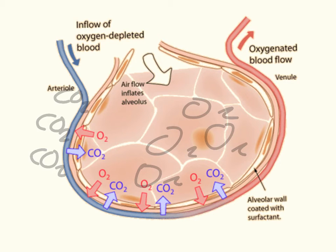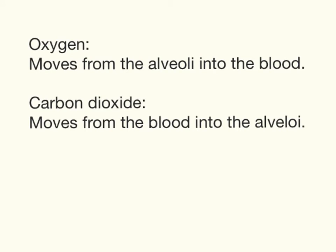The next part is about carbon dioxide. The carbon dioxide is the opposite way around. The blood that arrives at the lungs has a lot of CO2 inside it, a lot of carbon dioxide, so it will move via diffusion into the air sac.